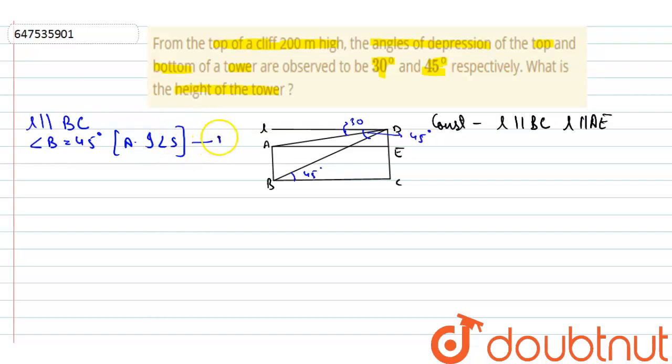This is the equation first. Similarly, L is parallel to AE. Now, this angle will be equal to this. So, angle A is equal to 30 degree. Alternative interior angle.